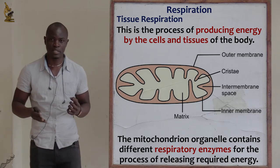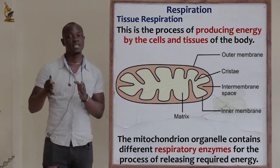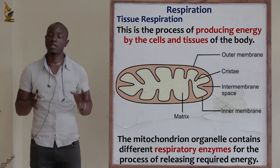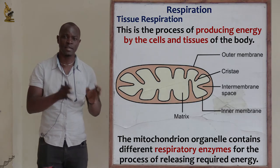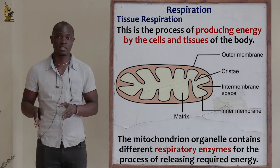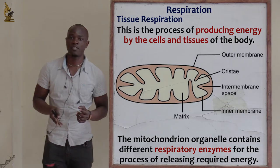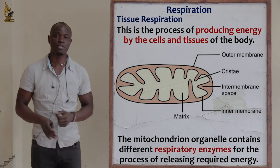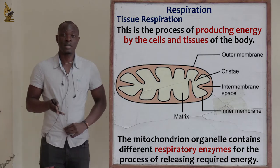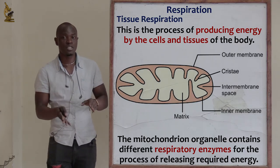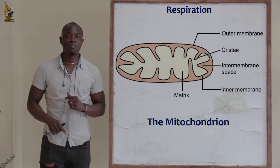Most organisms require oxygen for respiration to take place — not all organisms, but most. Some organisms don't require oxygen; in fact, if oxygen is available, some cells are going to die. Some bacteria and viruses don't require oxygen — if oxygen is made available, they will die. We are going to look at obligate and facultative anaerobes, and differentiate between organisms that die in the presence of oxygen versus those that die in its absence.